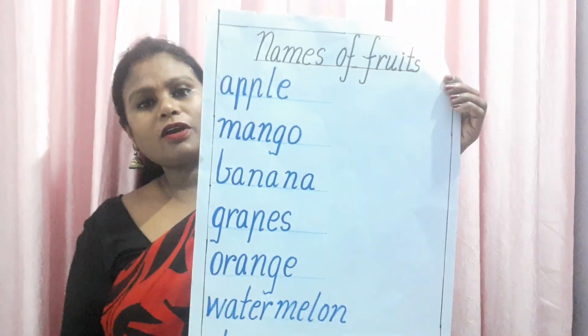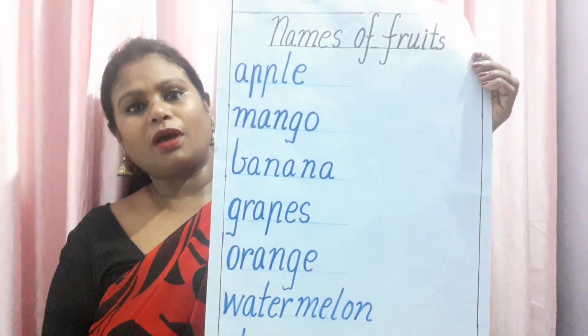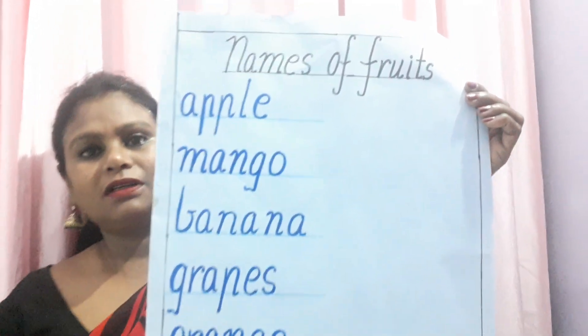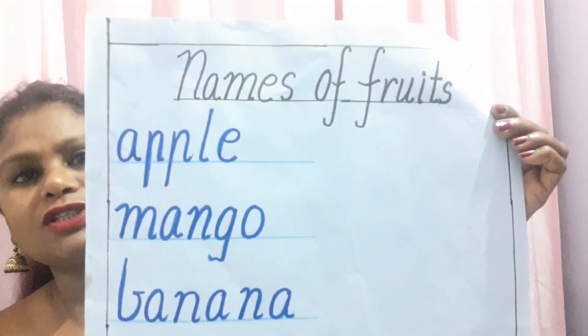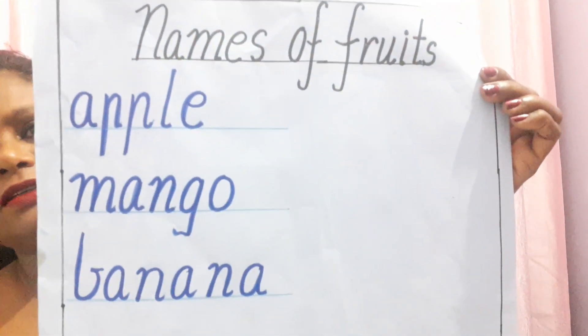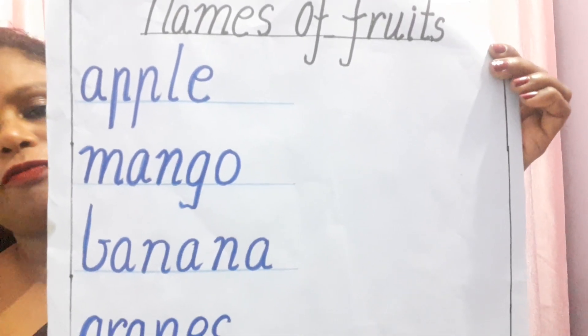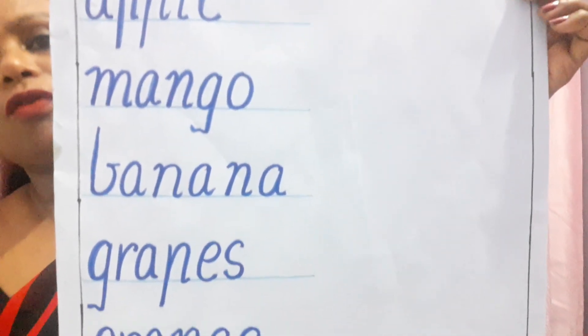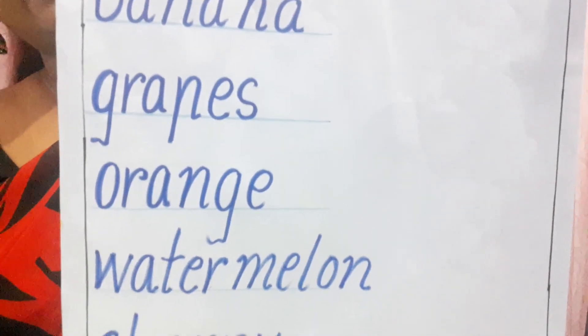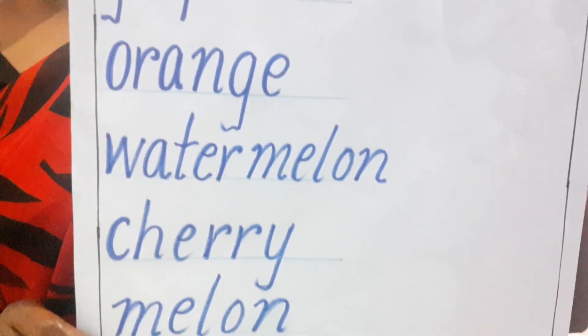Well children, these were the names of fruits. I have them all written in this chart. Look at them very carefully. All you have to do is write the names of fruits in your four-line copy. Make sure that you write them very neatly.